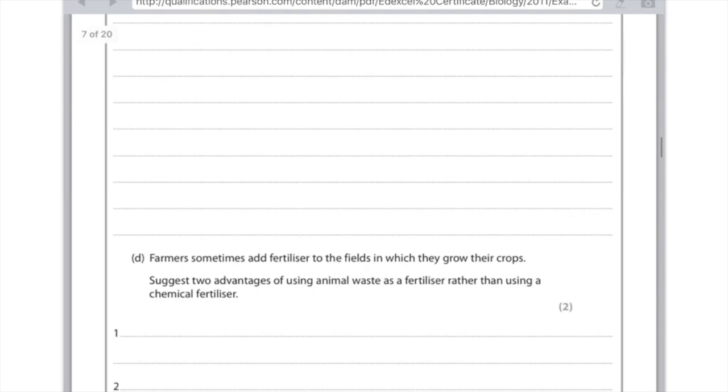You could say for the second mark that actually there'll be less eutrophication if you use animal waste. Remember that's when excess fertilizers are leached into rivers and cause excess plant growth which eventually leads to the death of aquatic animals. But yeah, first mark write cheaper, second mark write less eutrophication.